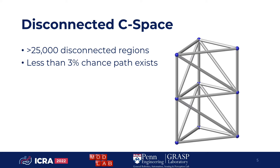For example, this robot, which has the same topology as on the previous slide, has over 25,000 different disconnected regions in configuration space. This is because there are a vast number of ways that the edges of the truss can be inextricably tangled up. If you were to sample two configurations at random, the chance that they would be connected is less than 3%. Sampling-based planners are not very good at identifying these cases when a path doesn't exist, so we would like to find a different way to determine if two configurations are likely to have a collision-free path between them.